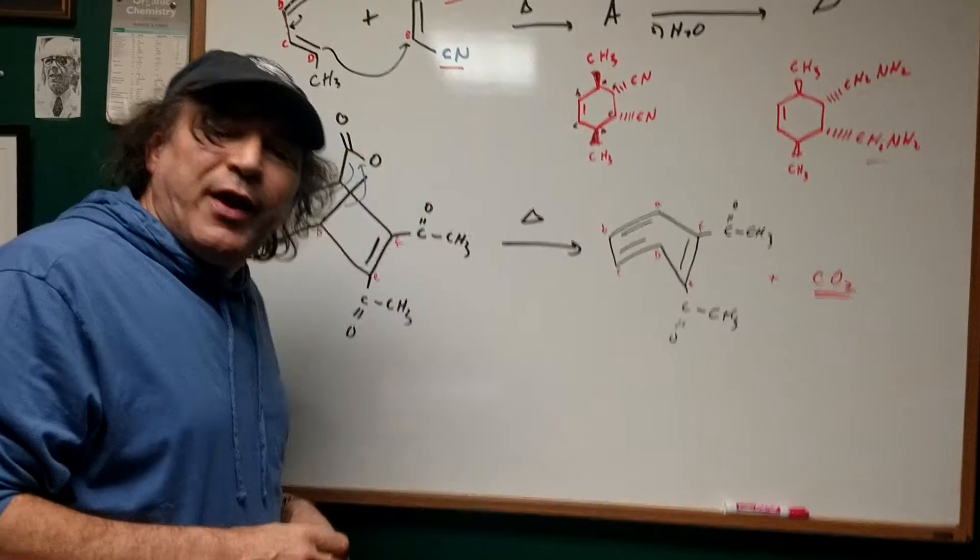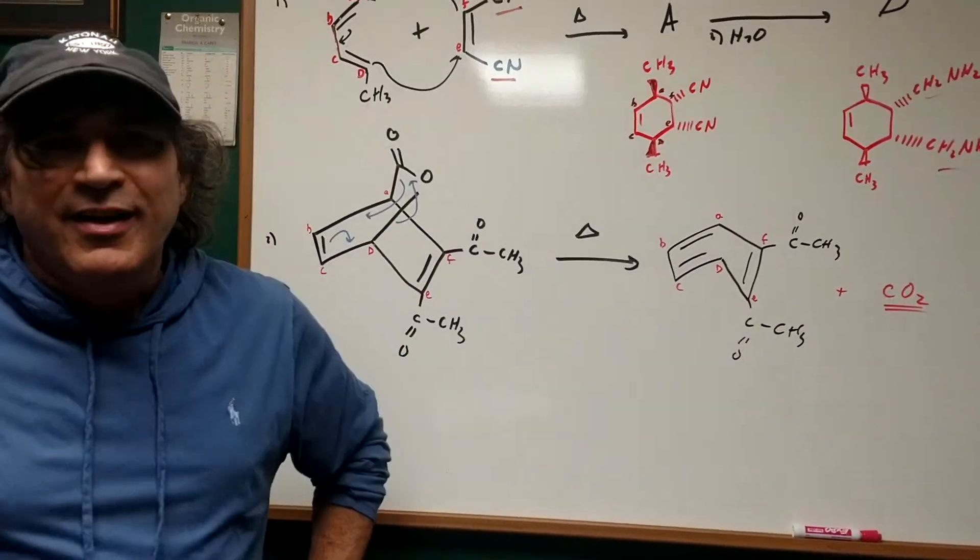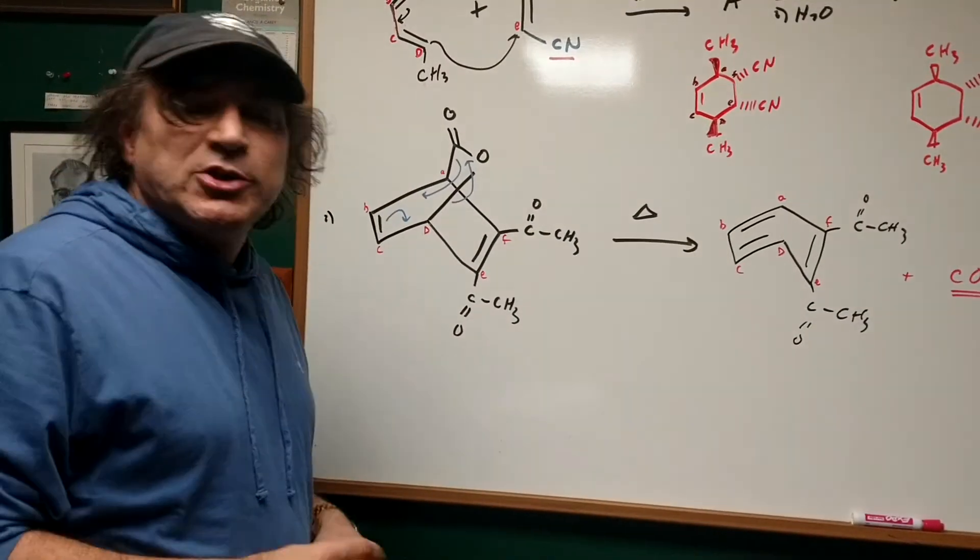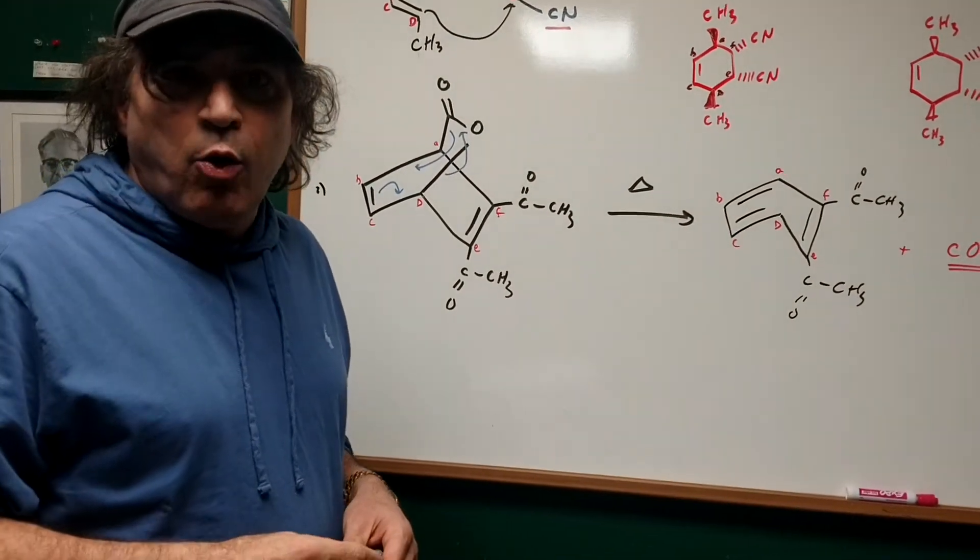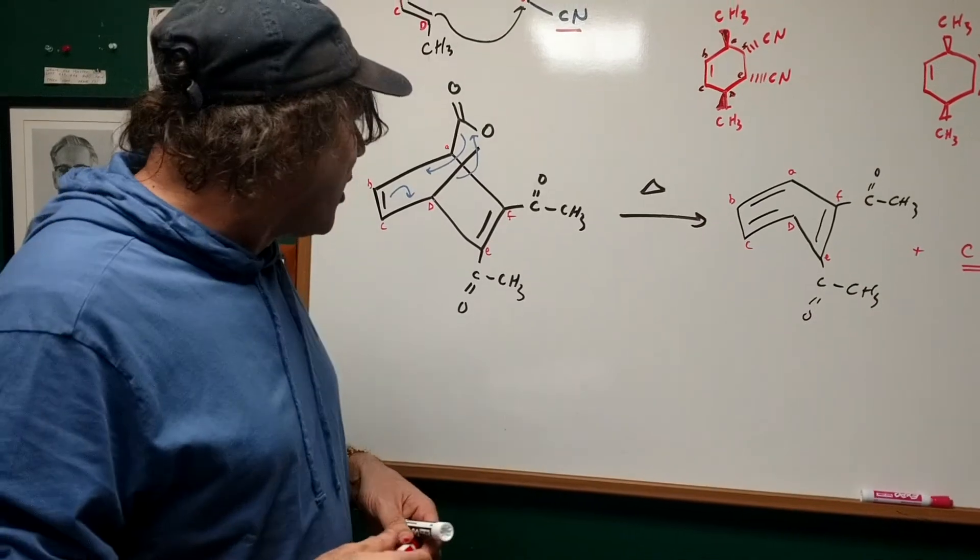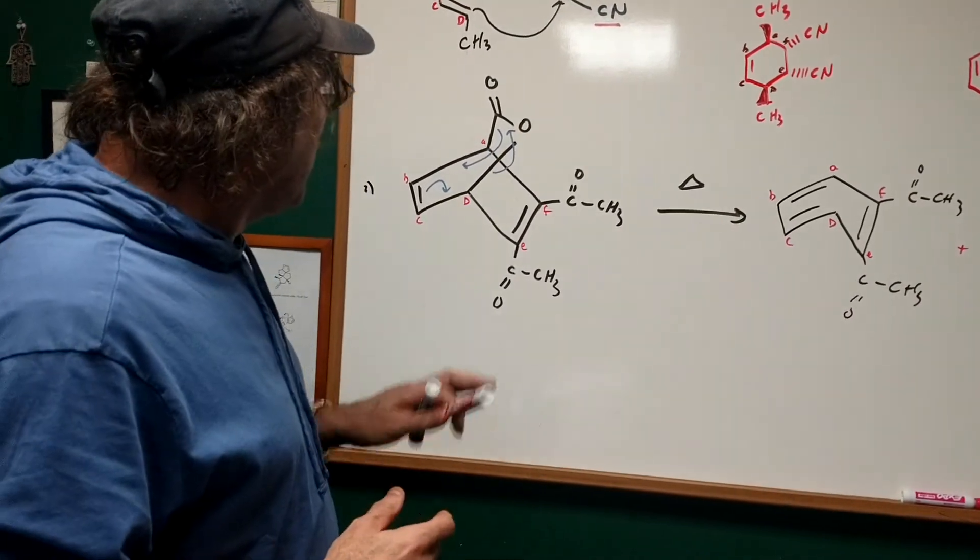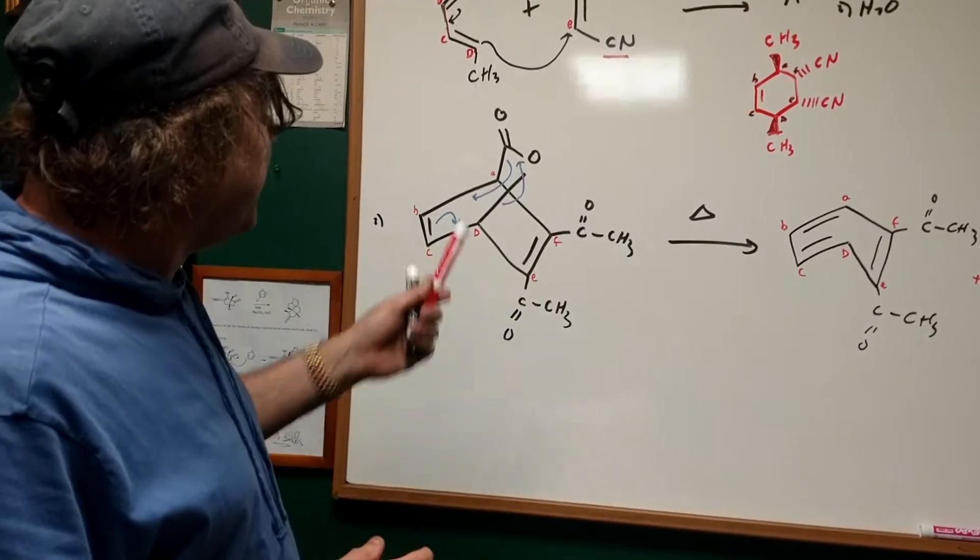Number two, I don't think you're probably going to see this on the DAT. This is a little tricky, but I want to just go over it with you. This is known as a reverse Diels-Alder or in organic chemistry parlance, a retro Diels-Alder. When we look at this molecule, I drew the arrows for you.